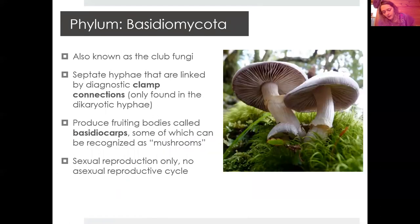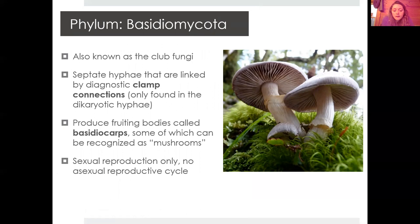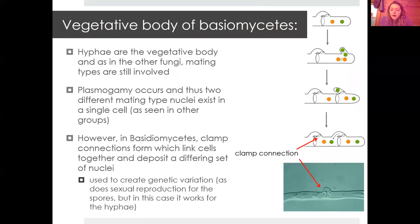The main group we're going to talk about are the Basidiomycota — these are our club fungi. These are what you think of as a regular fungus you'd buy in the grocery store. They're really diverse with different life forms. Their fruiting bodies are called basidiocarps. They only reproduce sexually — there is no asexual reproduction cycle — and their hyphae are linked together by diagnostic clamp connections found only within the dikaryotic hyphae of the Basidiomycota.